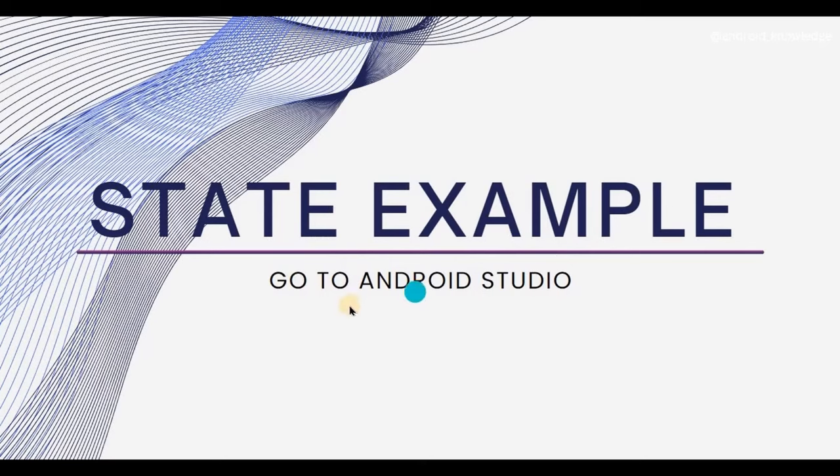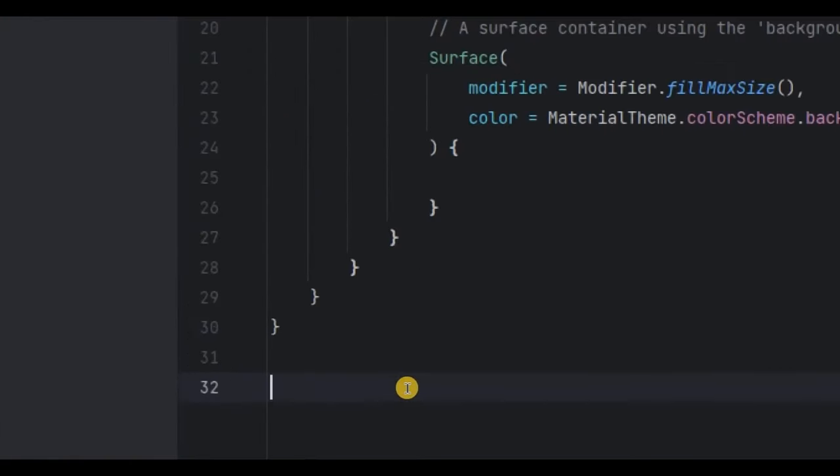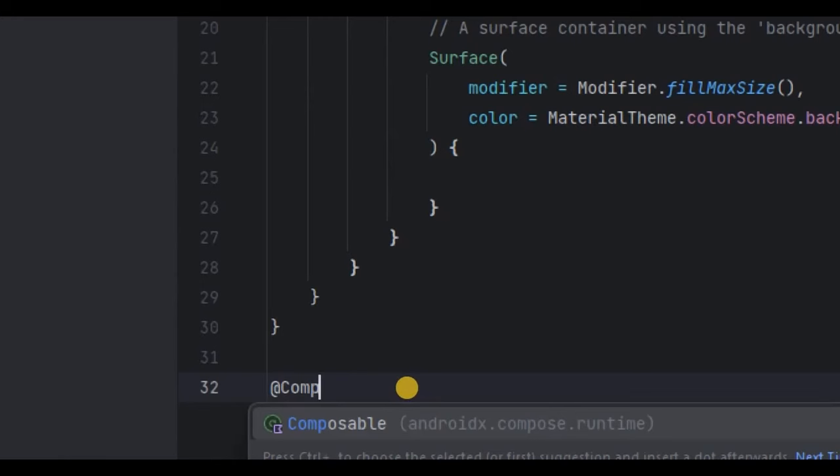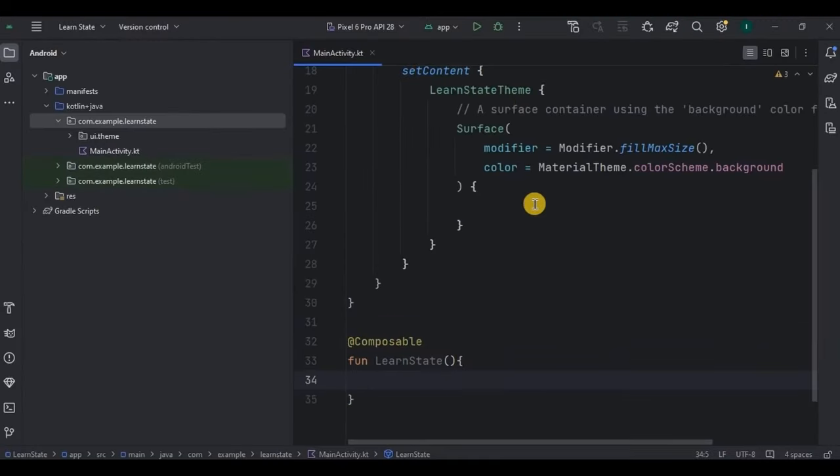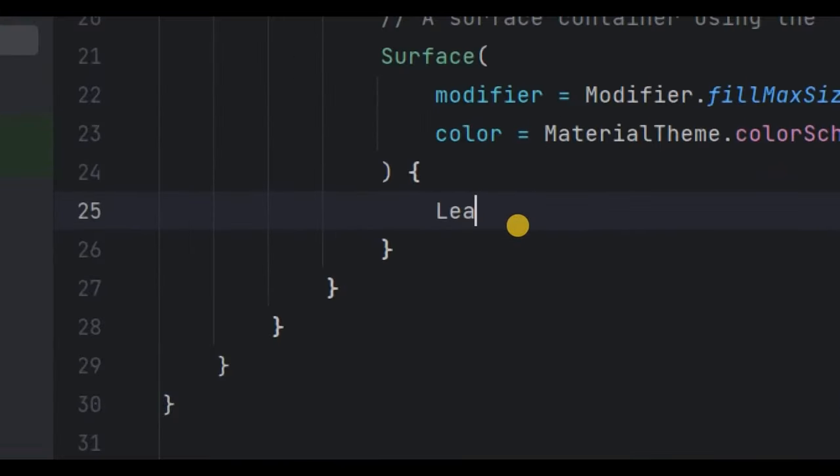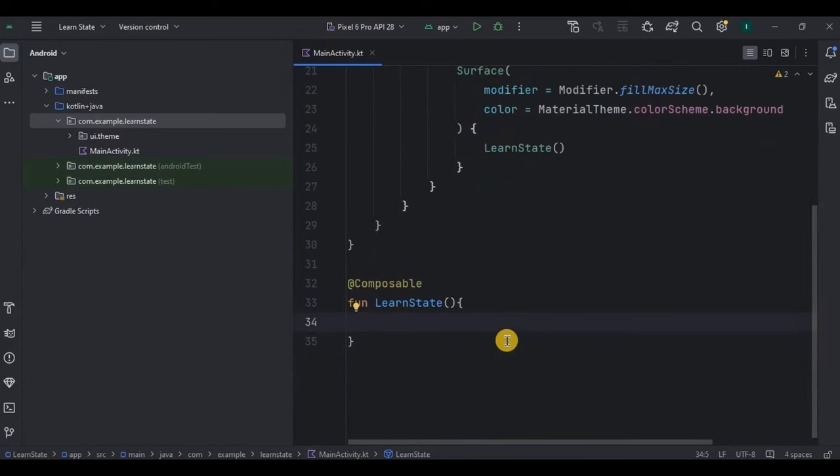Now it's time for some practical example. So go to your Android Studio. Here I have removed the default code. Then I will create a composable function as LearnState. And make sure to call it here inside the set content. And done.